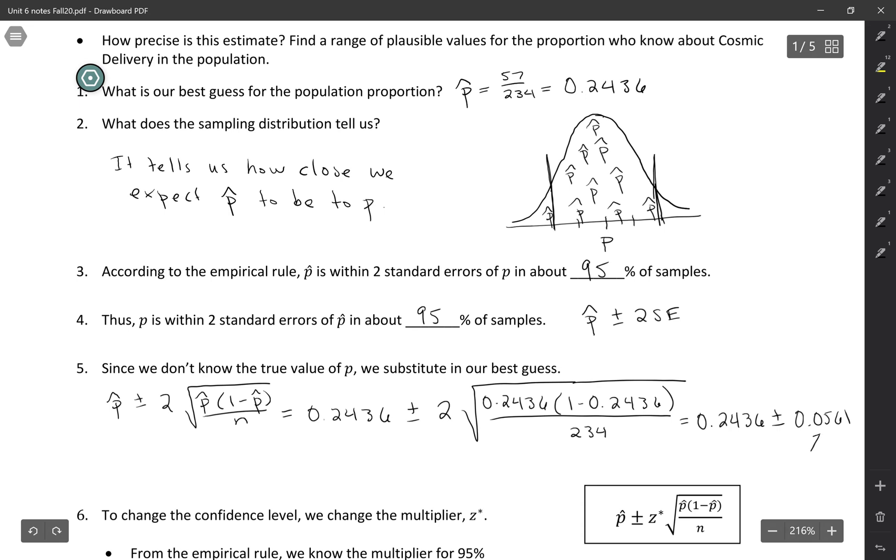This amount that we're adding and subtracting on each side, that's called the margin of error. So we have our sample statistic, that's like our best estimate of the parameter, but we're giving ourselves a little bit of wiggle room by adding the margin of error on each side.